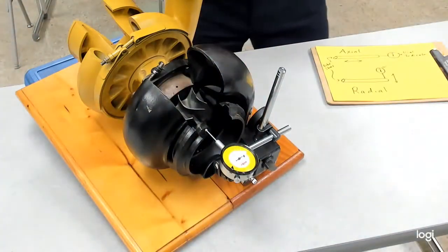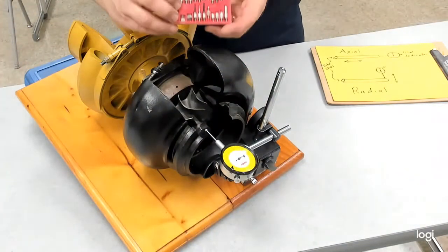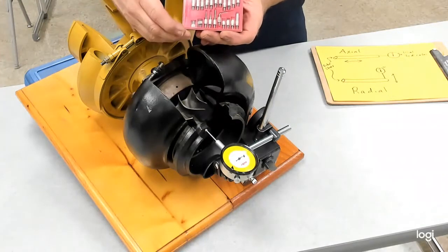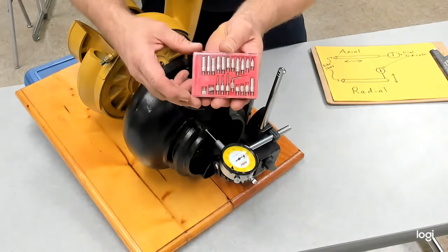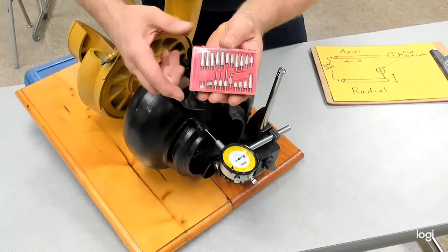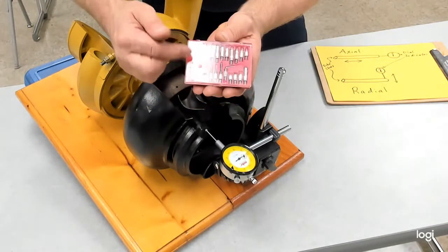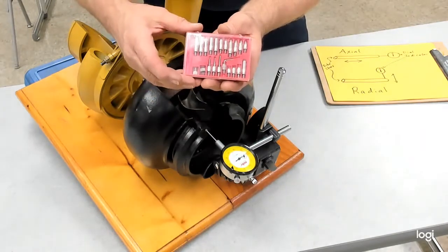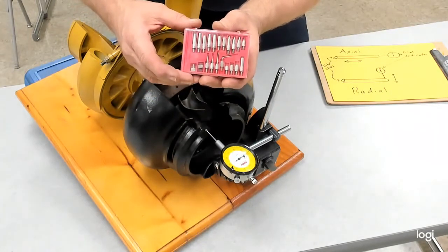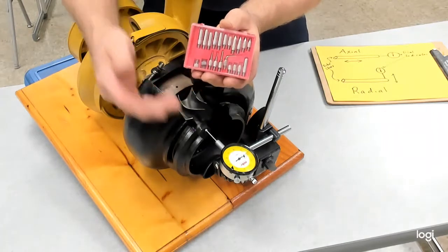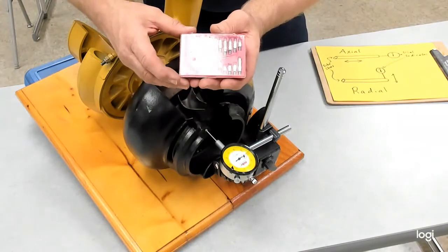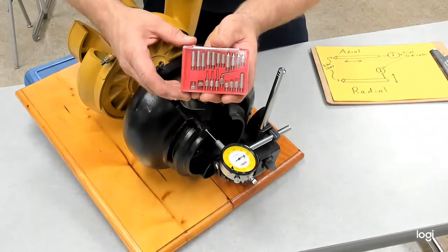In some cases the dial indicator might not be long enough and you may have to use extensions or adapters. A little kit that you have here has different points, different length tips. Some of them get really fine or tiny to get into certain situations to make the measurement possible. So if the dial indicator as it comes out of the box is not usable, see your instructor and they'll help you adapt something that will work.